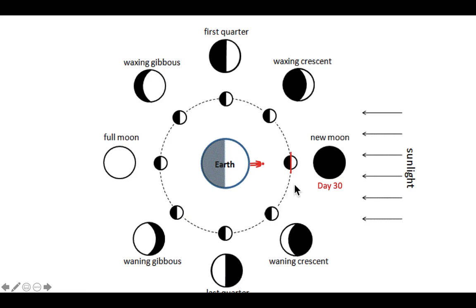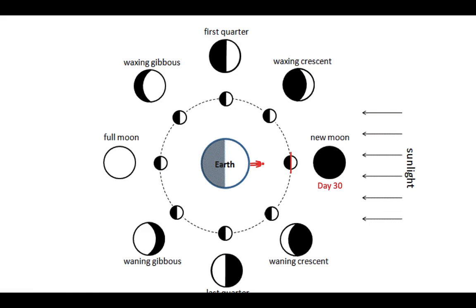It's actually exactly 29.5 days to get all the way through the lunar cycle, but we can round that to 30 days. This is what our month is based on — approximately 30 days to go once through the lunar cycle. You can tell the word 'month' was based on the word 'moon.' That is how to interpret the diagram of the lunar phases and cycles in 30 days. Hope that helps — thanks!